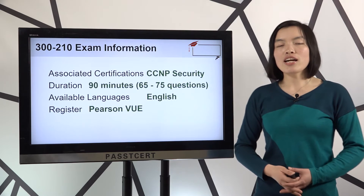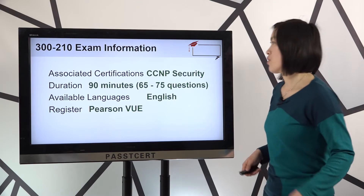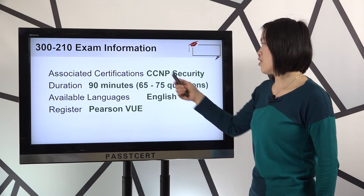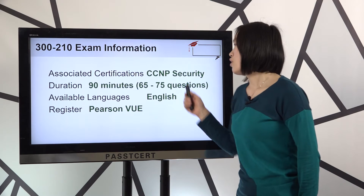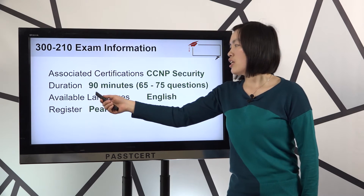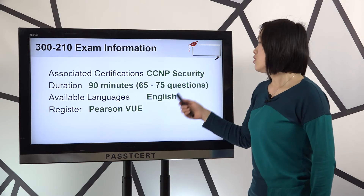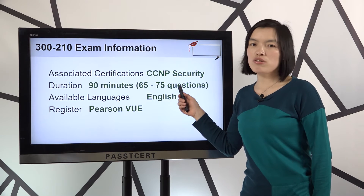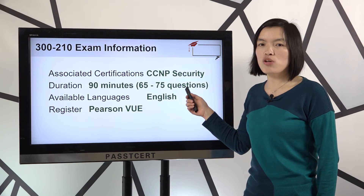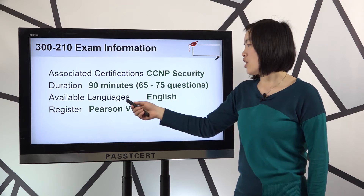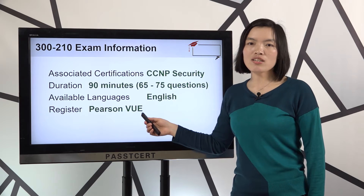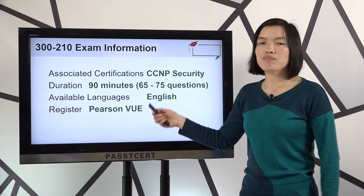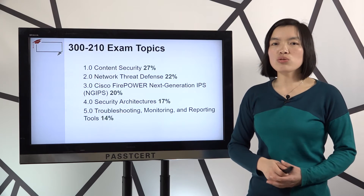Let's view the real test information first. Here you can check the associated certification is CCNP Security. The exam duration is 90 minutes. There are 65 to 75 questions in the real 300-210 exam. The test language is English. You can register the test at Pearson VUE testing center.